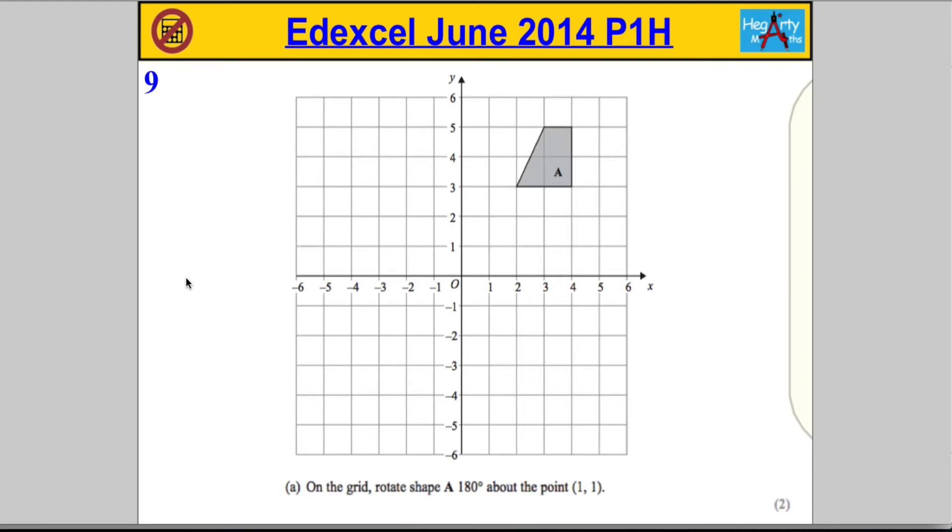Question 9 is our usual transformation style question. Part A, we're asked on the grid to rotate shape A 180 degrees about the point (1,1).